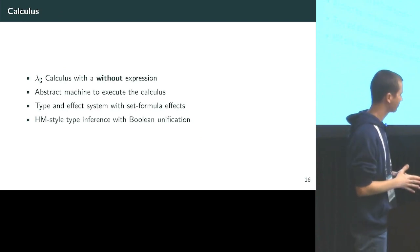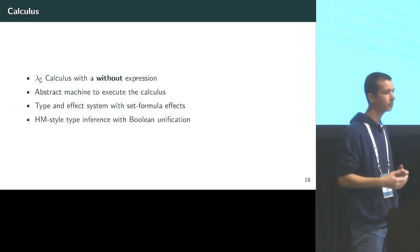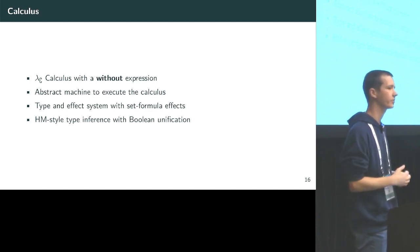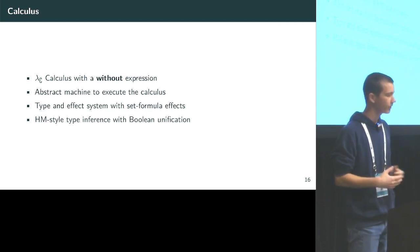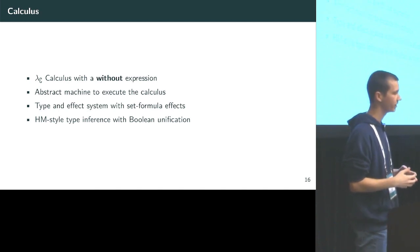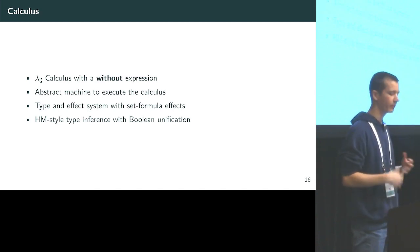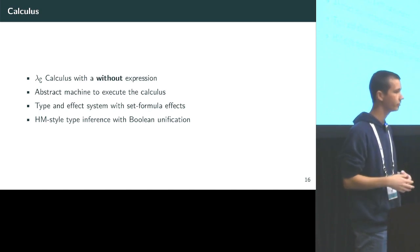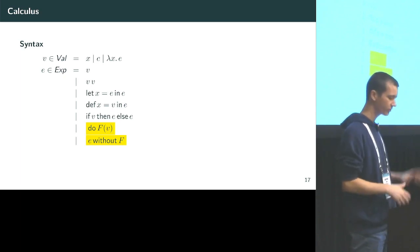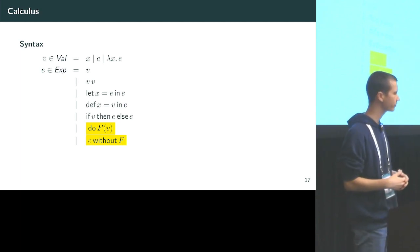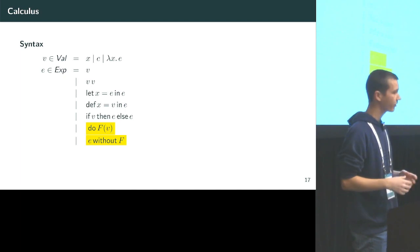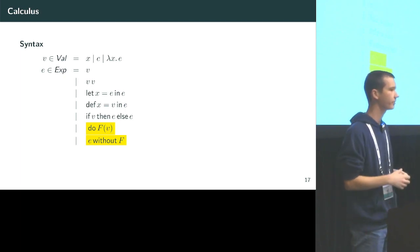Now I'll look at the formalism. We've defined the Lambda Complement Calculus: a simple lambda calculus augmented with a 'without' expression. We have an abstract machine that executes the calculus, and a type and effect system using set-formula-based effects, with Hindley-Milner type inference using boolean unification. The syntax of our language is mostly standard. The two important parts are the 'do' expression, which executes an effect f, and the 'without' expression, which forbids an effect f from occurring.